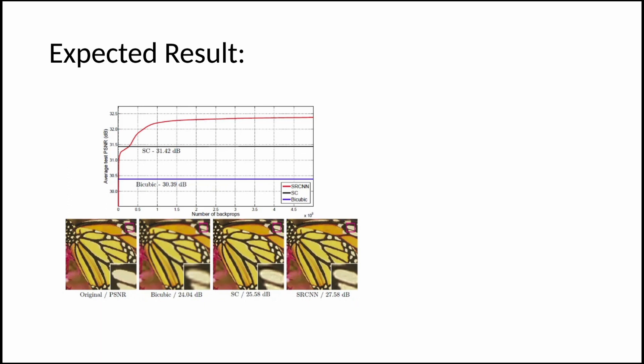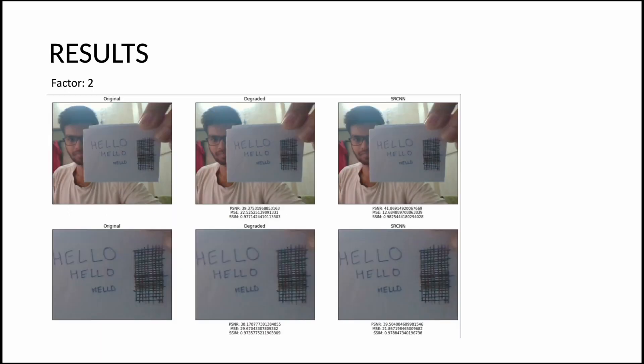Interpolation tries curve fitting and does not add any new information to the signal, whereas a neural network adds new information and with that ability it is able to outperform image processing methods. Observing the result on an image captured by my webcam, we see that the SRCNN model is able to improve the peak signal-to-noise ratio, reduce the mean square error, and increase the structural similarity of the degraded image.